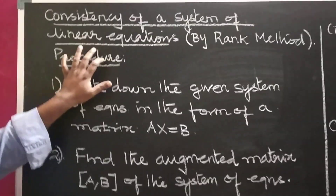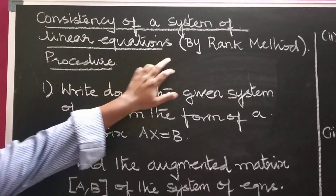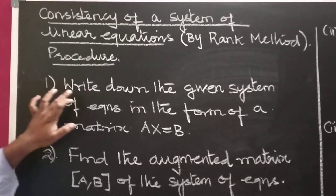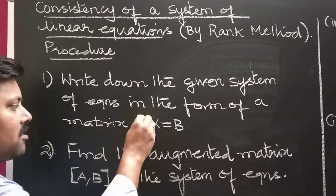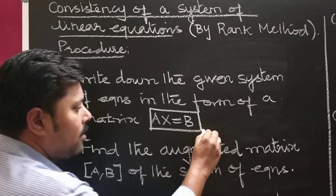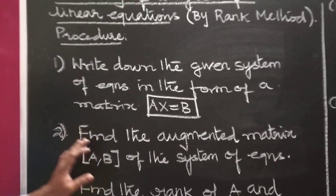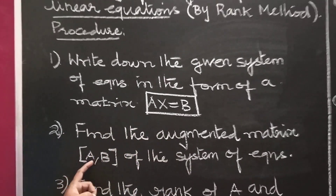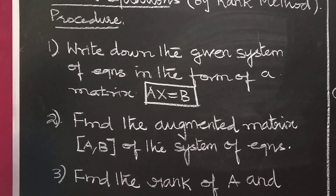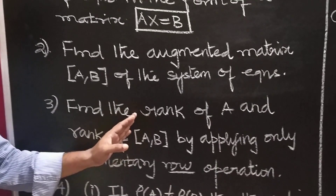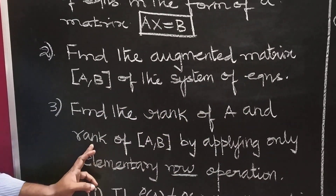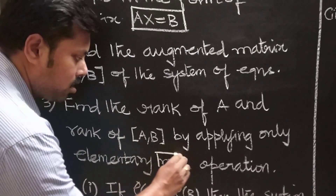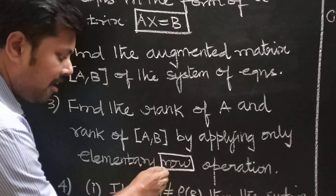Consistency of a system of linear equations by rank method. Procedure: Step 1, write down the given system of equations in matrix form A equals B. Step 2, find the augmented matrix — the augmented matrix is nothing but a combined matrix — find the augmented matrix [A, B] of the given system of equations. Step 3, find the rank of matrix A and rank of the augmented matrix [A, B] by applying only row operations, not column operations.